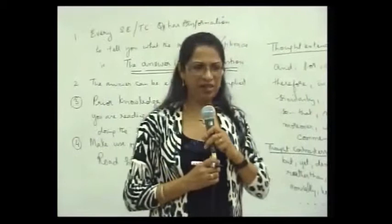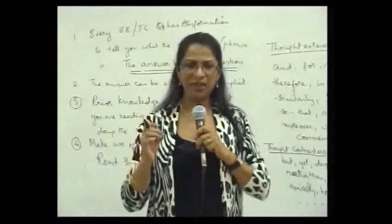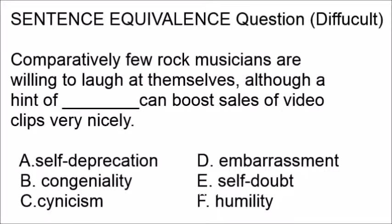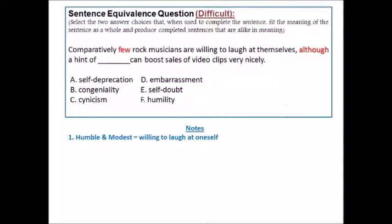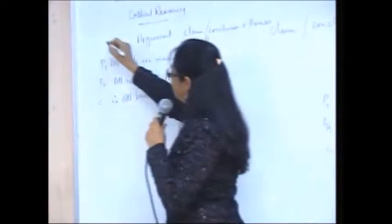Let us once again summarize what we have learned so far. The sentence equivalence and text completion questions require us to read critically. The intention is to use our reasoning to pinpoint and gather the information from the questions and go for the correct word. Comparatively, it says few rock musicians are willing to laugh at themselves. What is this willingness to laugh at yourself? We have looked at it as being humble and modest — and there you immediately catch option F, which is humility, fitting very perfectly with our context.